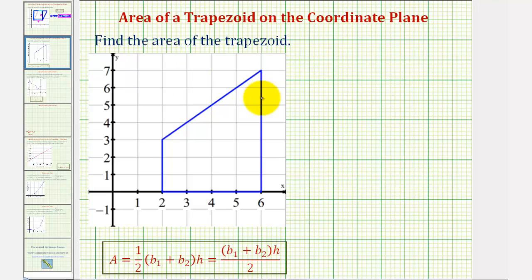We want to find the area of the trapezoid graphed on the coordinate plane. A trapezoid is a quadrilateral that has one pair of parallel sides.